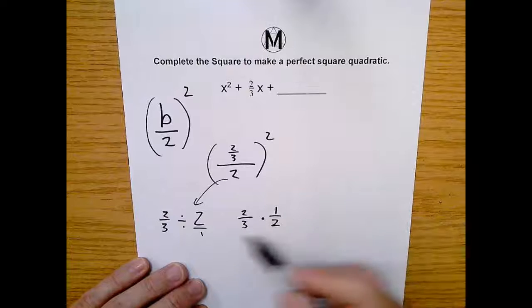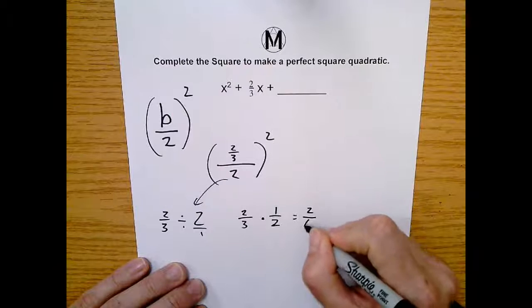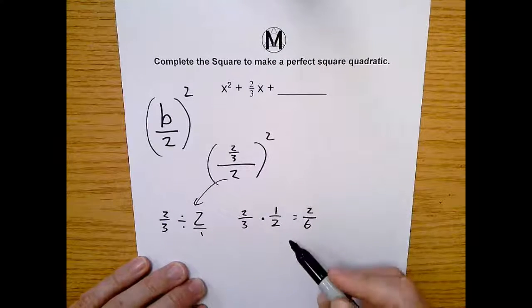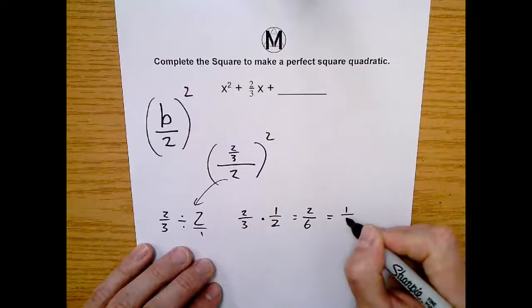So now we just multiply fractions, top, top, 2 times 1 is 2, bottom, bottom, 3 times 2 is 6. Or we say numerator times numerator, denominator times denominator. Regardless, we get 2 over 6, which is the same as 1 over 3.